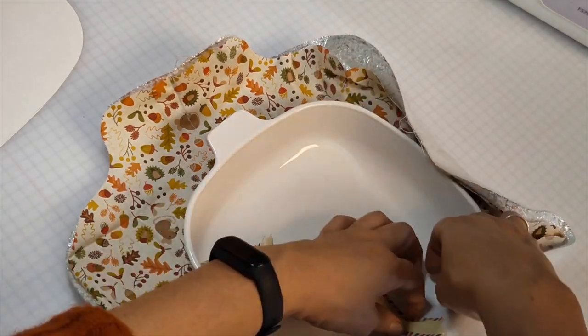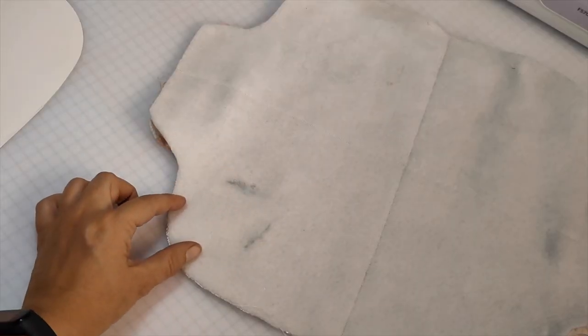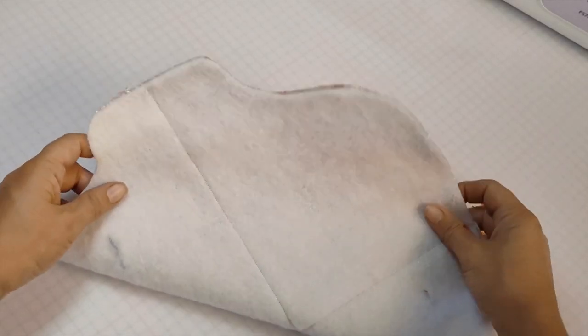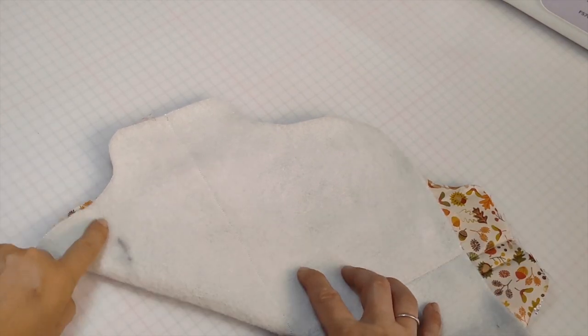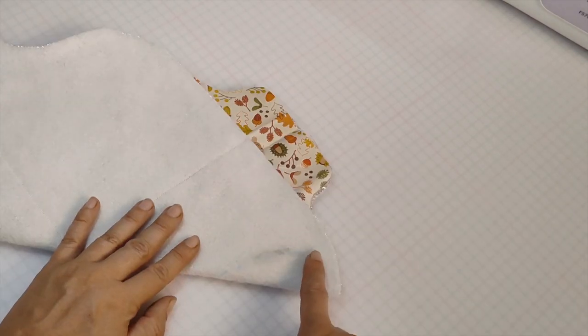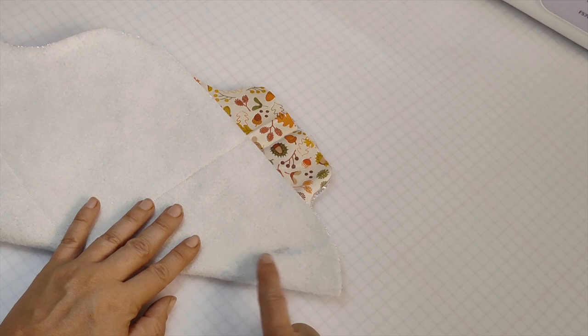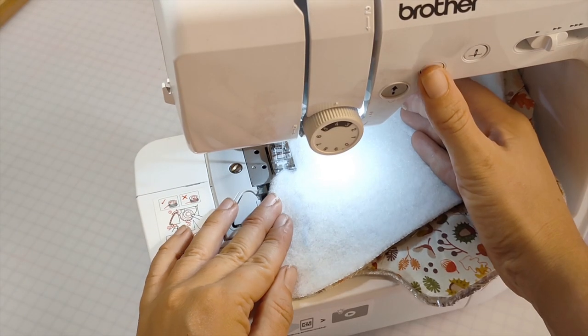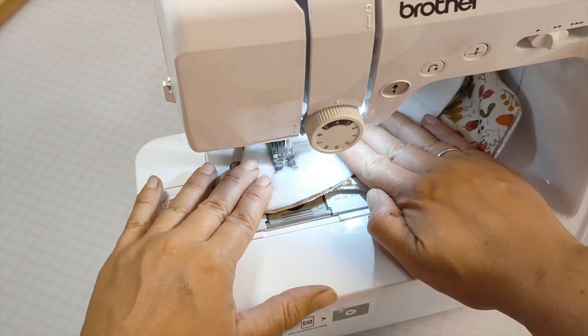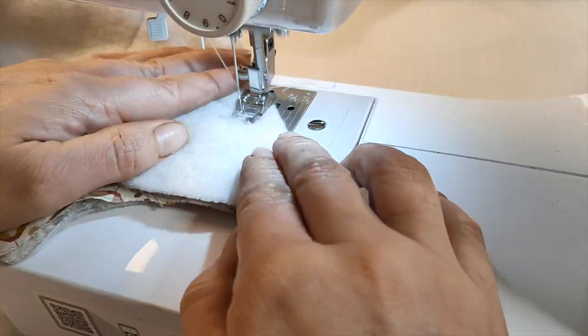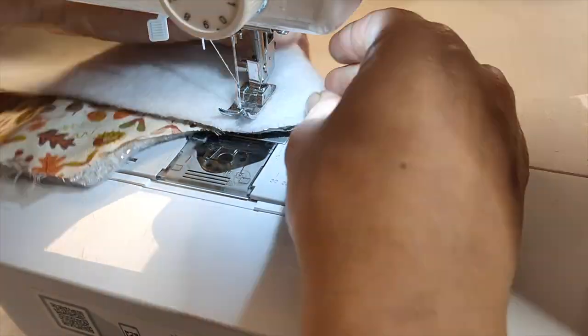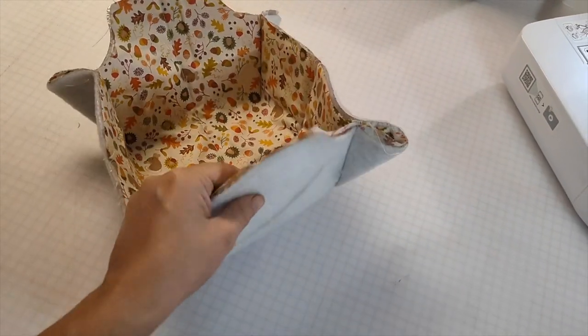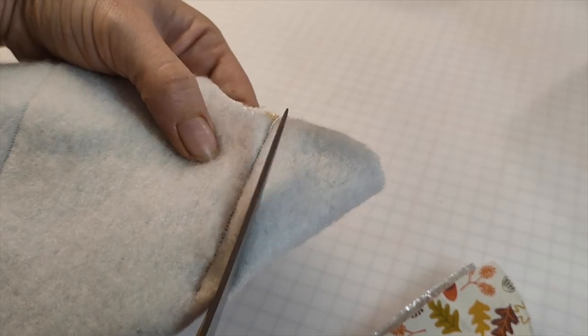Now remove the fabric from the casserole dish. This will tell you where your seam needs to be. Fold your fabric corner to corner you'll then see the line where you need to sew. Make this clearer by using a ruler and a pen or a chalk marker. Sew all four corners where marked. Once you've sewn all four corners you want to snip off the excess.